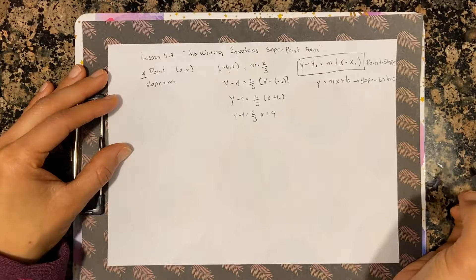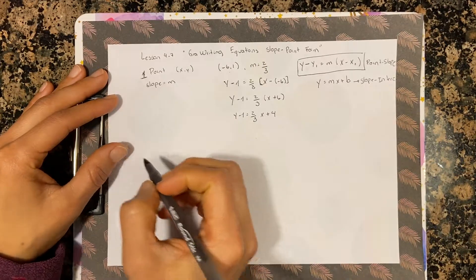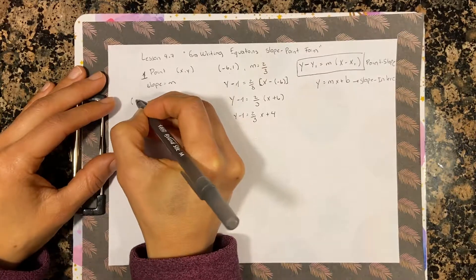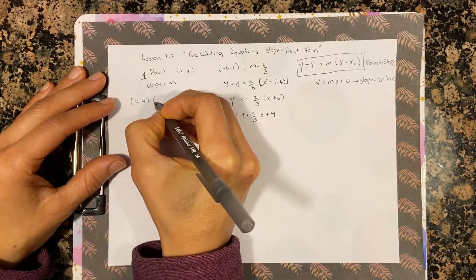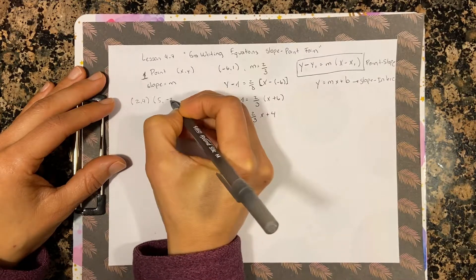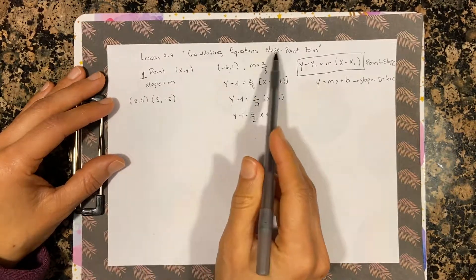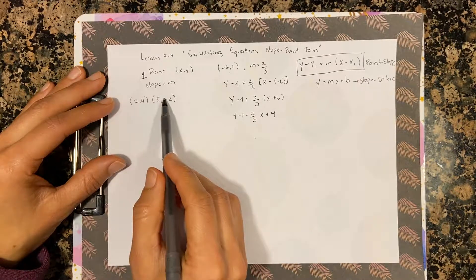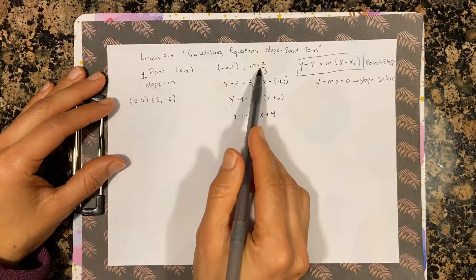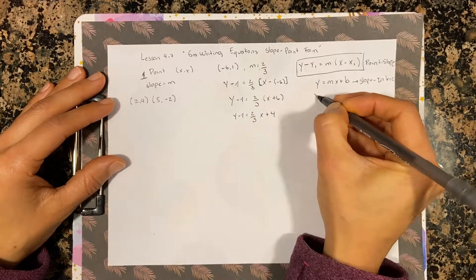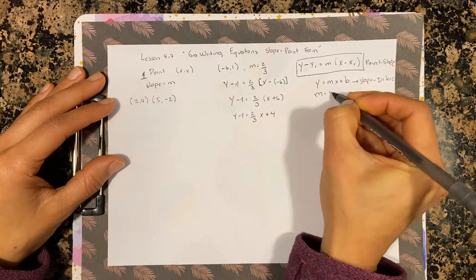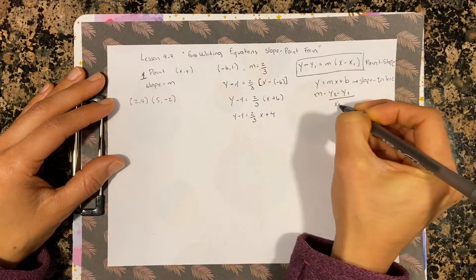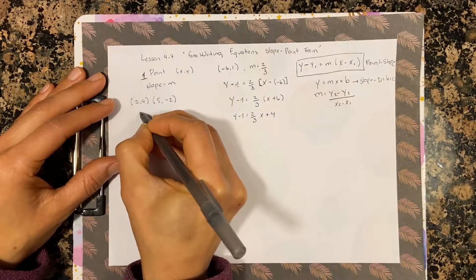If you are given two points — say (2, 4) and (5, -2) — and asked to write the equation in slope-point form, you do need the slope. But if you have two points you can find the slope using the formula: m equals (y₂ minus y₁) divided by (x₂ minus x₁).